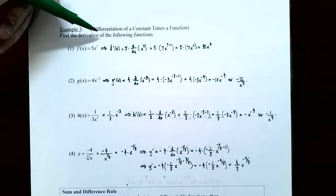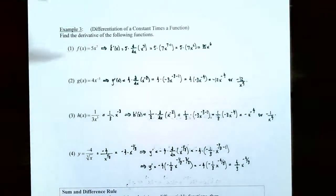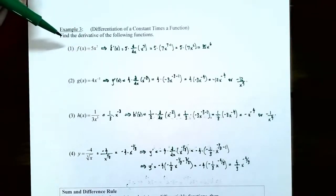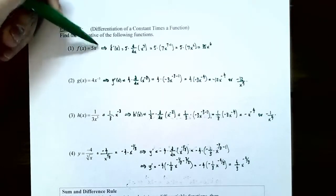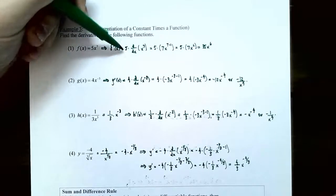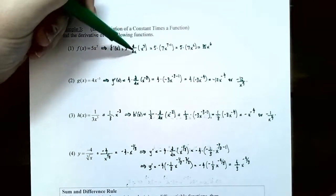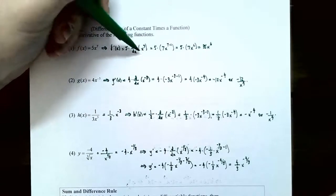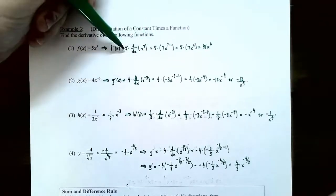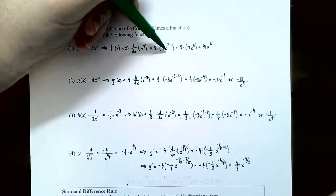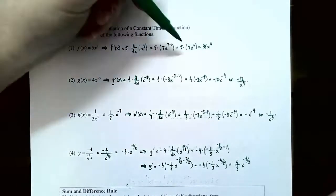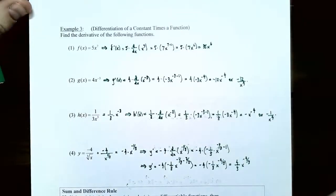Example three, differentiation of a constant times a function. Find the derivative of the following functions. Number one, f of x equals 5 times x to the 7th. It's a constant times a power function, so f prime of x: keep the constant 5 and take the derivative of x to the 7th. Bring the exponent 7 down, keep the x, subtract 1 from the exponent: 5 times 7 x to the 6th. Simplifying, 5 times 7 is 35, so 35x to the 6th is the derivative of f of x.